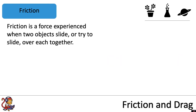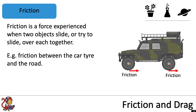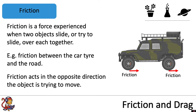Friction is a force experienced when two objects slide or try to slide over each other. For example, friction between a car tire and the road. Friction acts in the opposite direction to the direction the object is trying to move in.